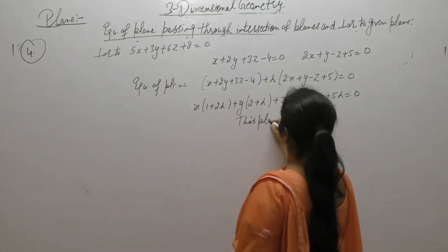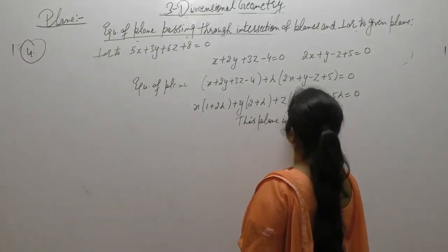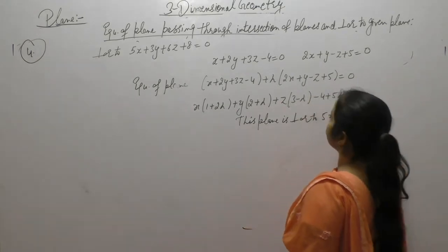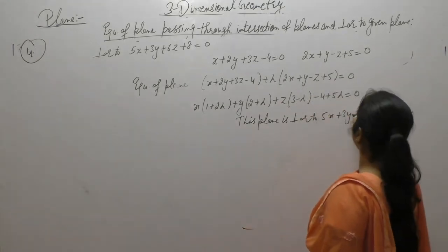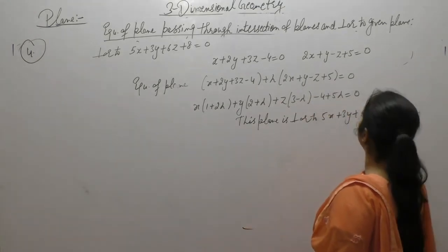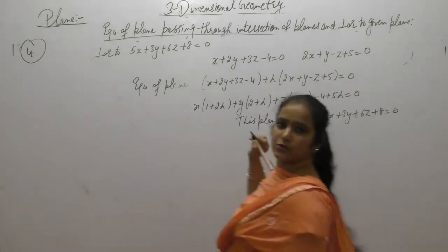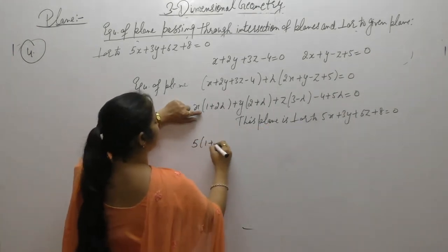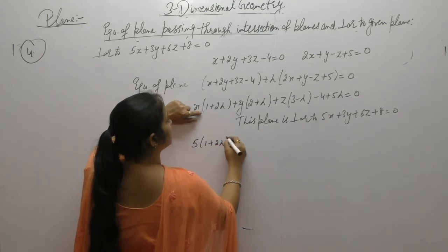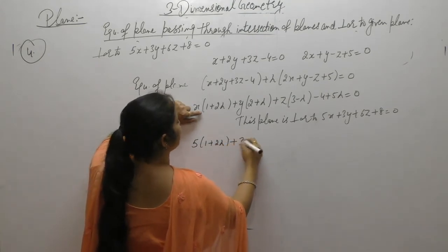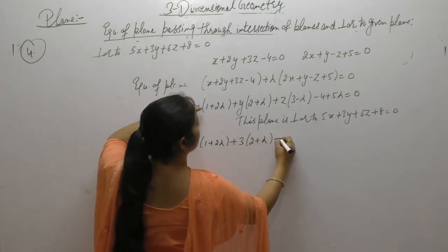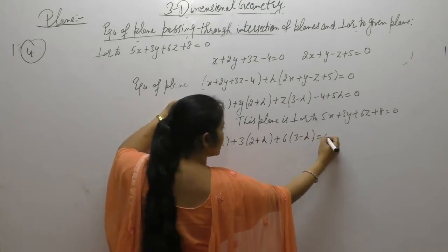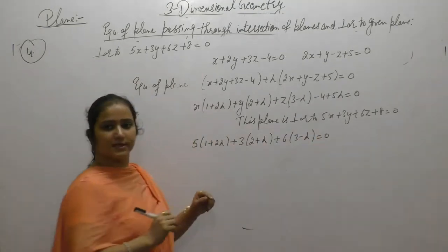This plane is perpendicular to 5x plus 3y plus 6z plus 8 equals 0. So applying the perpendicularity condition a1·a2 plus b1·b2 plus c1·c2 equals 0.